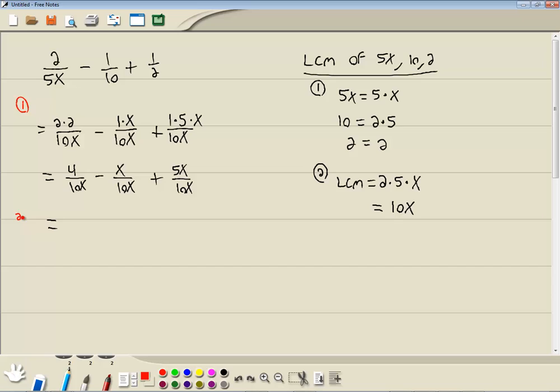Now our second step. Now that we've got a common denominator is add together all your top parts. Let me go ahead and put them together and do a single fraction to begin with. So we've got 4 minus x plus 5x over 10x.